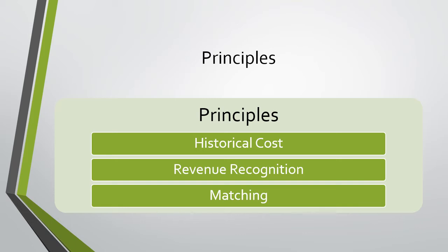The first principle listed is the historical cost principle. This says that we will record our assets for the price we bought them for and not what they are valued at today. Whether the value has gone up or down, we will keep it at the price we purchased it for.